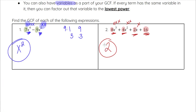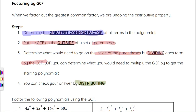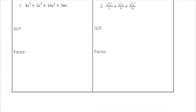Sometimes we see a GCF that has both a number and a variable — we'll see that in a moment. Our first step to factoring with the GCF is to find the greatest common factor. Then we put that GCF on the outside of parentheses, and to figure out what goes inside the parentheses, we divide each term by the GCF. We can always check our answers by distributing.